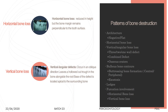Coming to the patterns of bone destruction — we will now see the different patterns. First is architectural changes. Normally the interdental bone is coronal to the facial and lingual cortical bone — this is positive architecture. During disease, the interdental crestal bone may come level with the facial and lingual bone, or go apical to it, resulting in flat architecture or negative architecture. That is the change in the architecture of the bone.